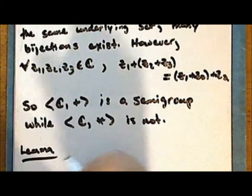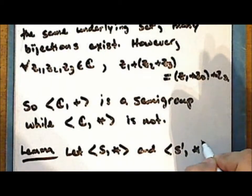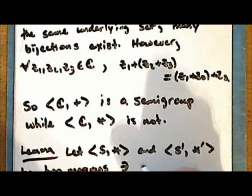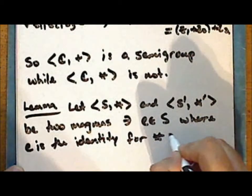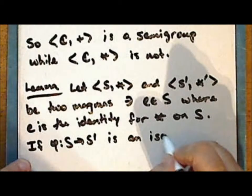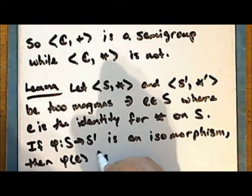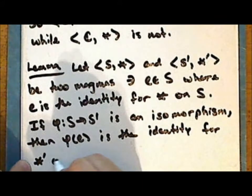Let the set S together with the binary operation star, and the set S' together with the binary operation star prime, be two magmas, such that the element E is in the set S, where E is the identity for the operation star on S. If the map φ from S into S' is an isomorphism, then φ(E) is the identity for the operation star prime on the set S'.